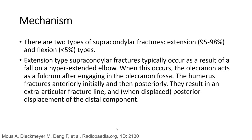There are two types of supracondylar fracture: extension, accounting for 95 to 98 percent, and flexion, less than 5 percent. Extension type supracondylar fracture typically occurs as a result of a fall on a hyperextended elbow. When this occurs, the olecranon acts as a fulcrum engaging the olecranon fossa, fracturing the humerus anteriorly initially and then posteriorly, resulting in an extra-articular fracture line and posterior displacement of the distal component.